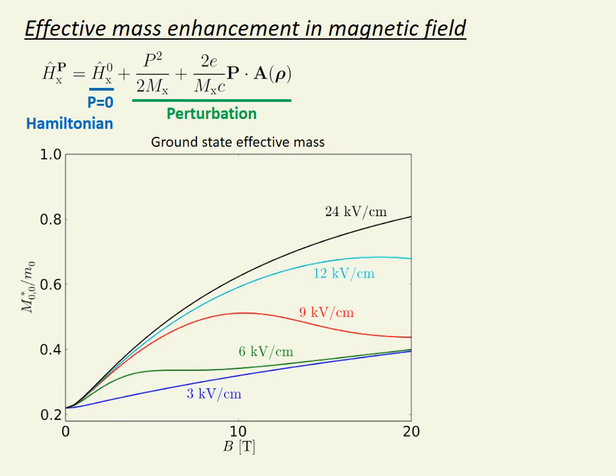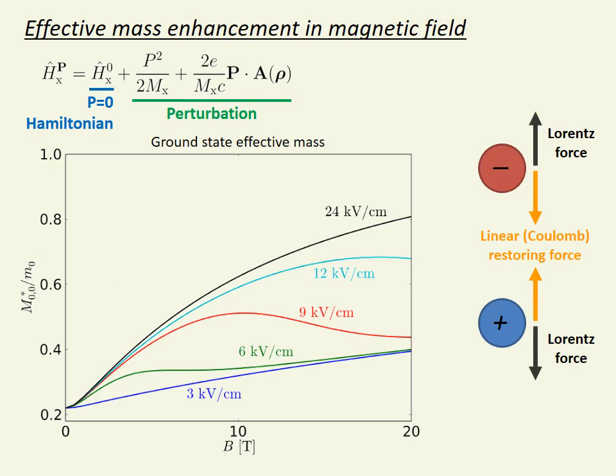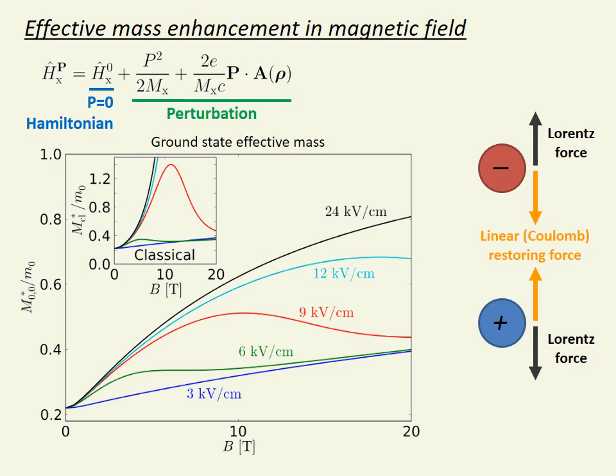The effective mass has a non-trivial dependence on magnetic field. In the paper, we explain this dependence using a simple classical analogy of two masses connected by a linear spring that approximates the Coulomb force between the charges. When balancing the Lorentz force and the restoring force, one arrives at a classical approximation of the mass enhancement. This is shown in the inset and closely resembles the full calculation.